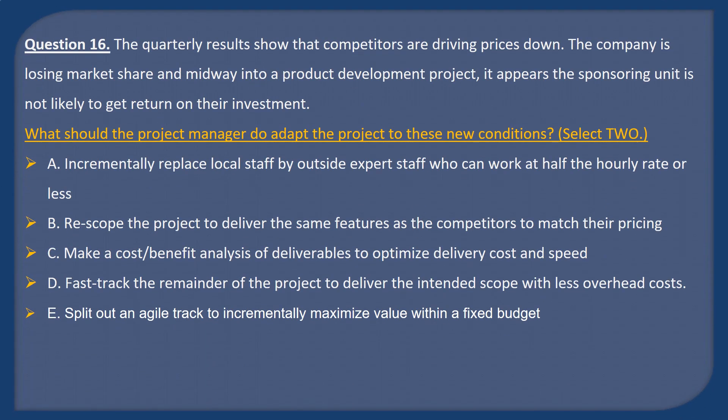Question 16. The quarterly results show that competitors are driving prices down. The company is losing market share and is midway into a product development project. It appears the sponsoring unit is not likely to get a return on their investment. What should the project manager do to adapt the project to these new conditions? Select two. A: Incrementally replace local staff with outside expert staff who can work at half the hourly rate or less. B: Re-scope the project to deliver the same features as competitors to match their pricing. C: Make a cost-benefit analysis of deliverables to optimize delivery cost and speed. D: Fast-track the remainder of the project to deliver the intended scope with less overhead cost.